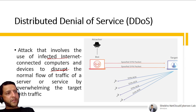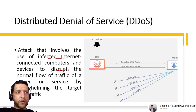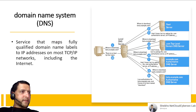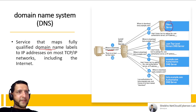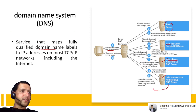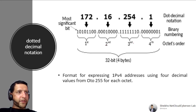DDoS (Distributed Denial of Service) involves the use of infected internet-connected devices to disrupt normal traffic of a server or service by overwhelming it. Unlike DoS (single attacker), DDoS uses botnets/zombies for much greater volume. DNS (Domain Name System) is a server/service that maps FQDNs to IP addresses. When your computer needs to resolve a domain, it queries a DNS resolver, which escalates through root servers, TLD servers, and authoritative servers until the IP is found, then caches it.